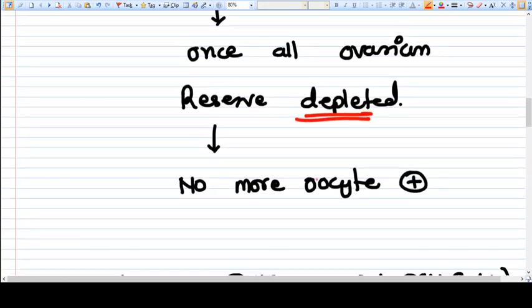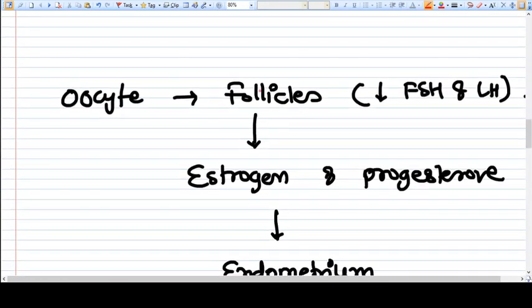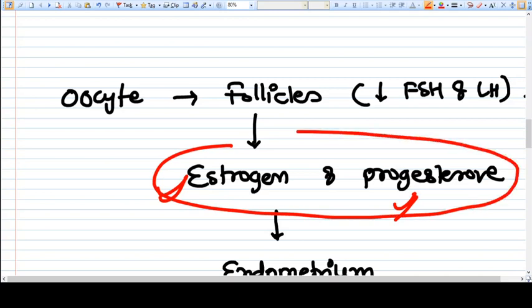Once all the ovarian reserve is depleted, there are no more oocytes. You need to understand very well that oocytes are actually the source of estrogen, progesterone, and androgens. So once we don't have any follicles or oocytes, the levels of estrogen and progesterone go down, and this is the central part of menopause.